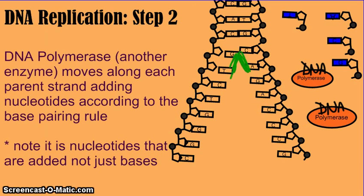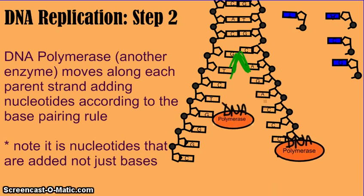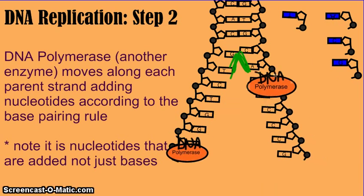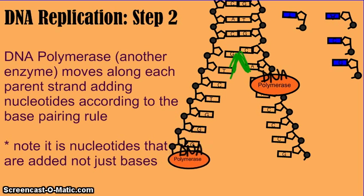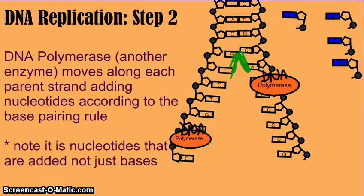Once that has occurred, a new enzyme called DNA polymerase comes in and bonds to the DNA, and the process of replication using nucleotides and the base pairing rule begins. The DNA polymerase moves along the strand, and as it moves along, it pairs up nucleotides. For instance, we have a C right here, and we know that C always pairs with G — so here comes a G. Notice it's a nucleotide: a sugar, a phosphate, and a base together.